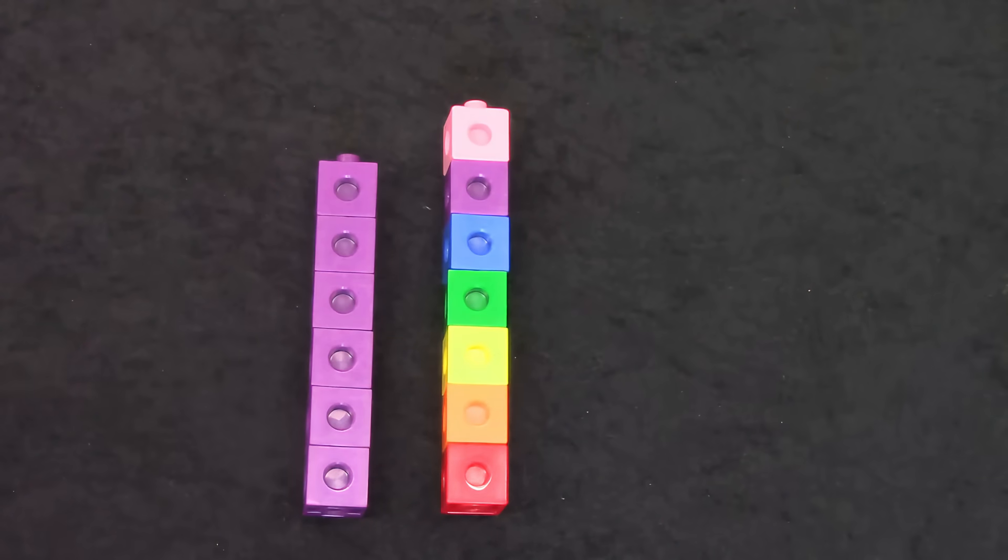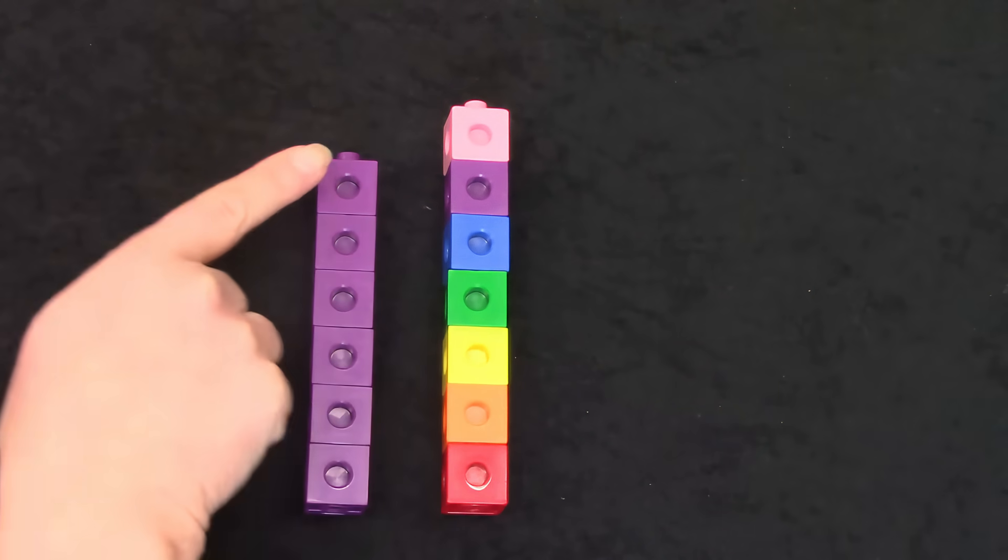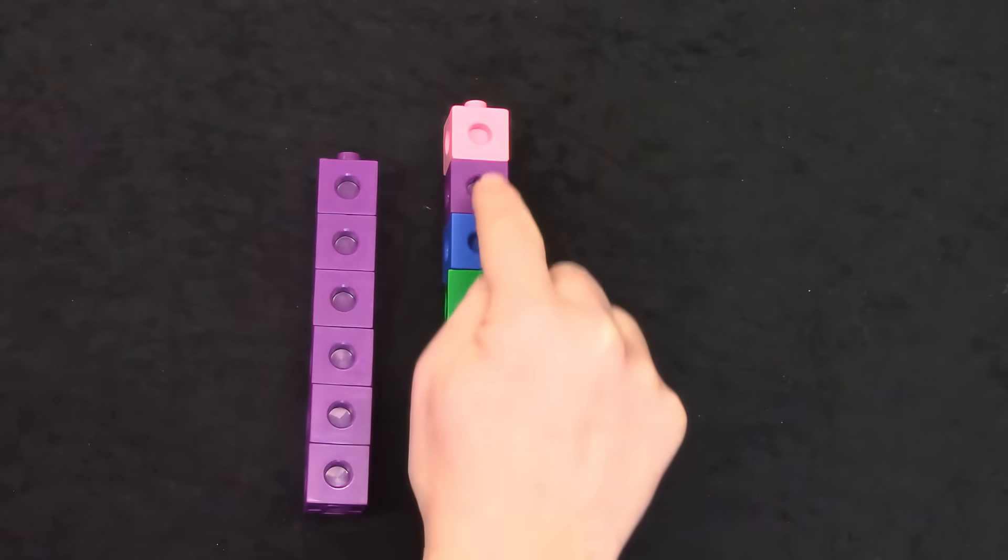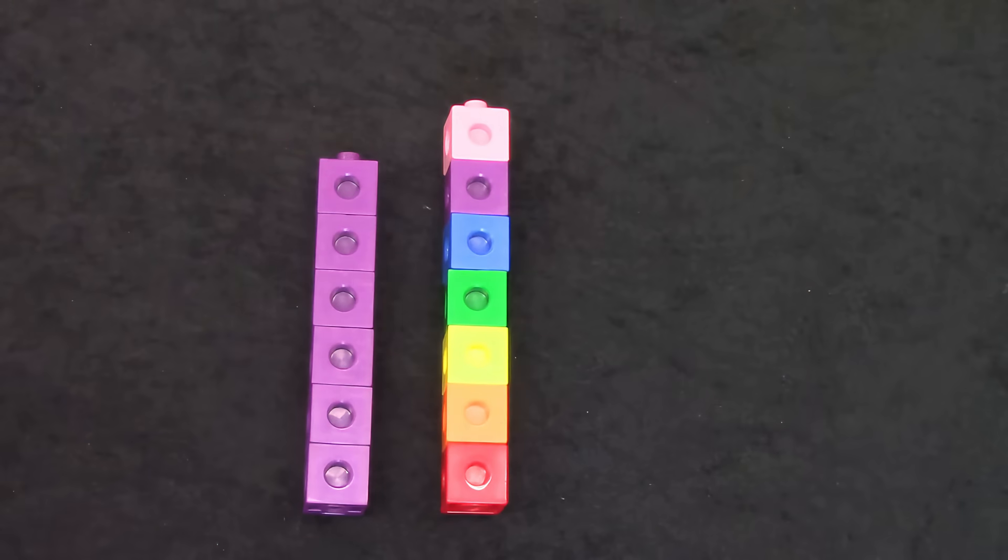Let's compare these two towers. This tower has 1 2 3 4 5 6 and this tower has 1 2 3 4 5 6 7. Which tower has more? You're right. It's the tower with 7.